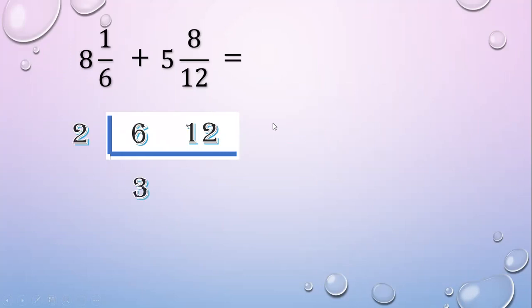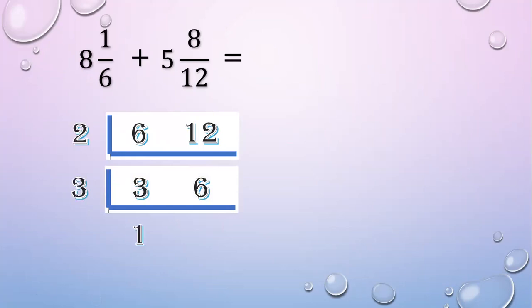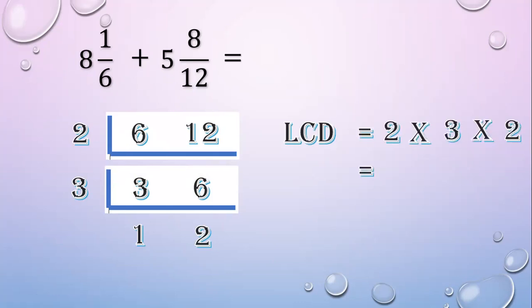Then 3 and 6 have a common factor of 3. 3 divided by 3 equals 1; 6 divided by 3 equals 2. The LCD equals 2 times 3 times 2. 2 times 3 equals 6, times 2 equals 12. So the LCD is 12.